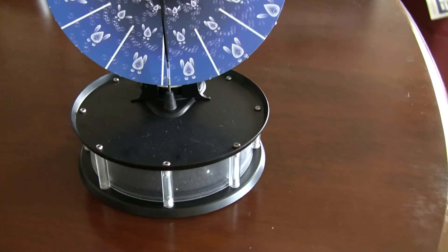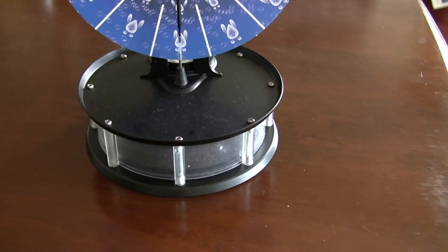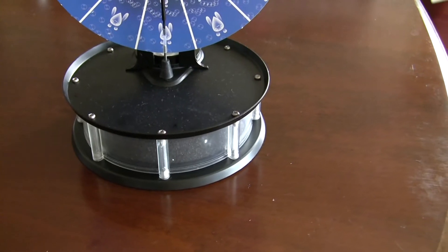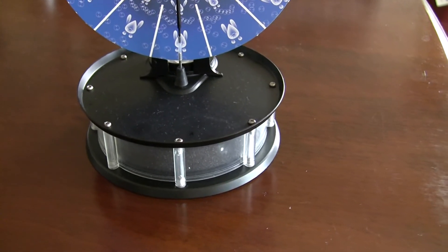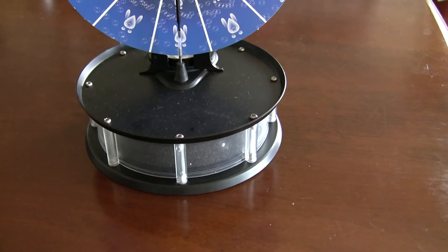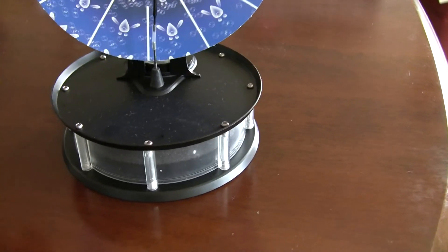The way it works is temperature differences between the top disc and the bottom disc. In the middle, we've got a plastic chamber that is pretty much airtight. And as the bottom disc is heated, or the top disc is cooled, it causes the piston to move.